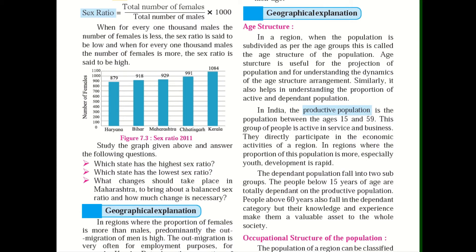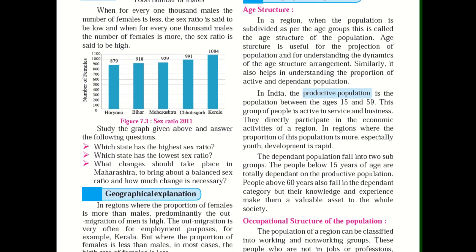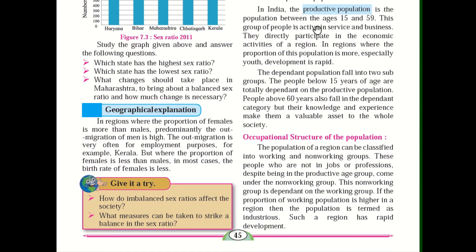Age structure is useful for the projection of population and for understanding the dynamics — that is, the changes in population arrangement. It also helps in understanding the proportion of active and dependent population. Active means how many members in your family are working. In India, the productive population is the population between the ages of 15 and 59. This group is active in services and business and directly participates in the economic activities of a region.